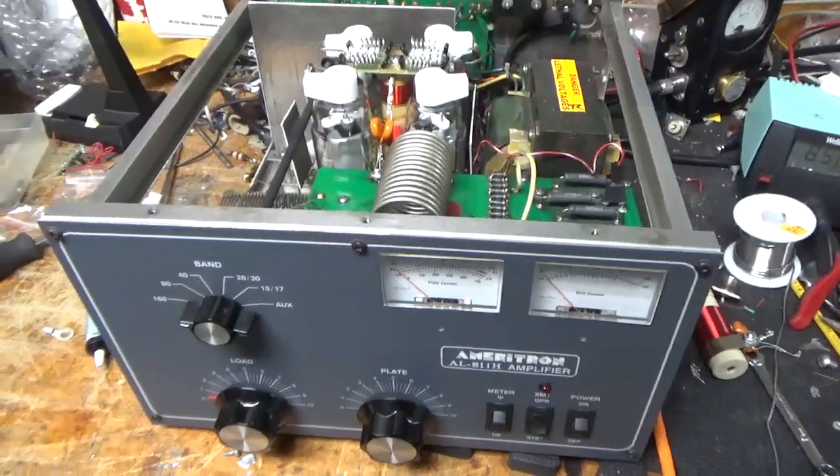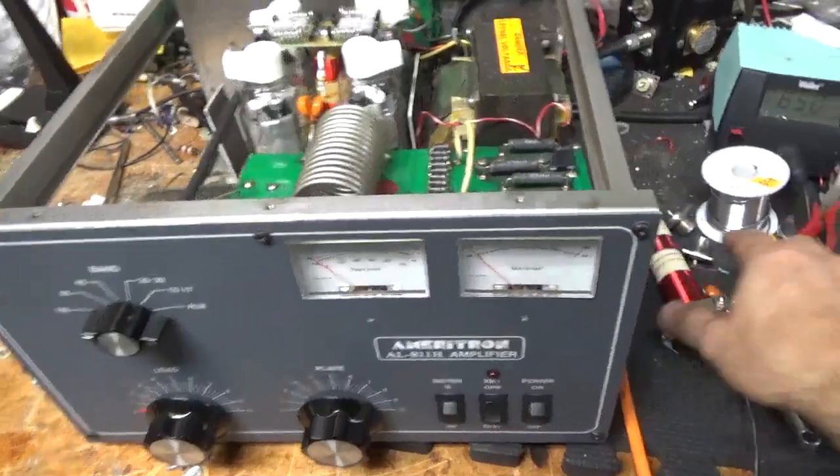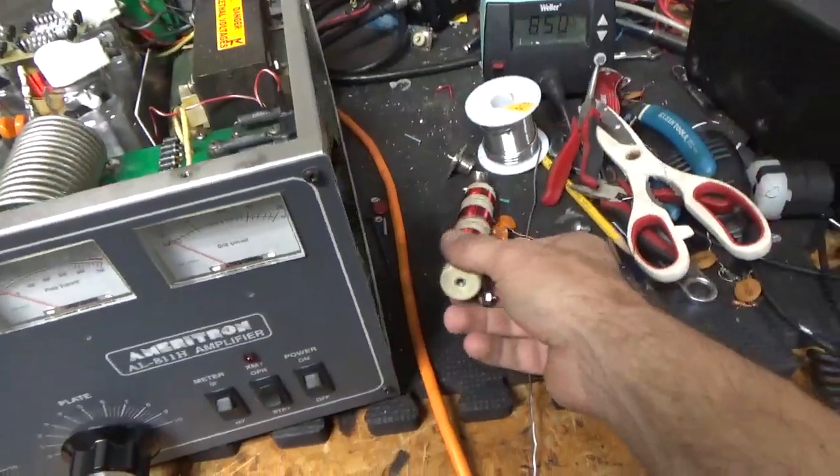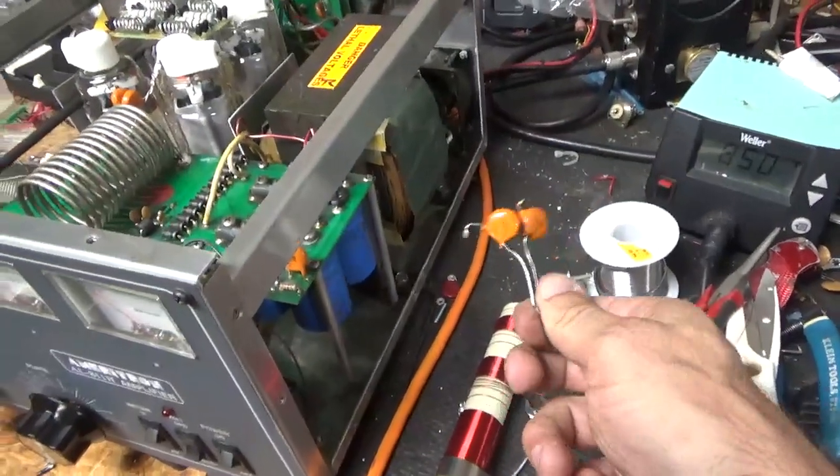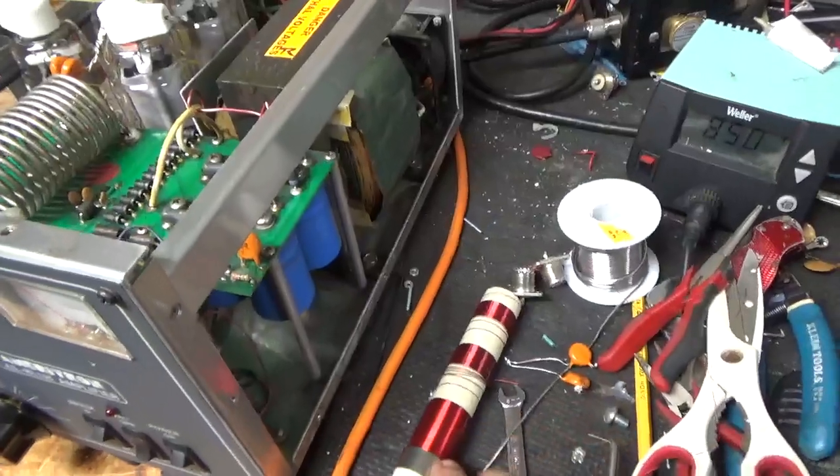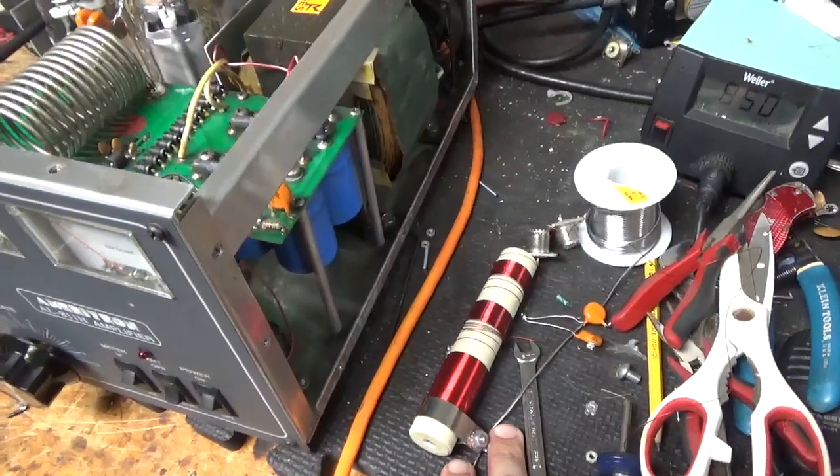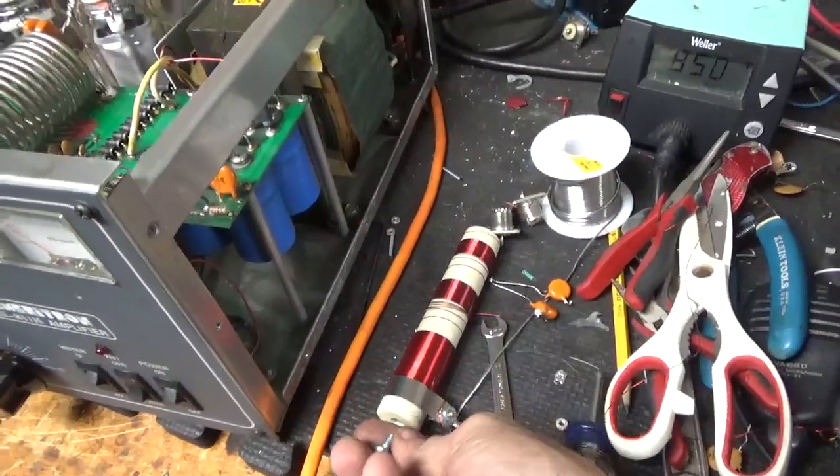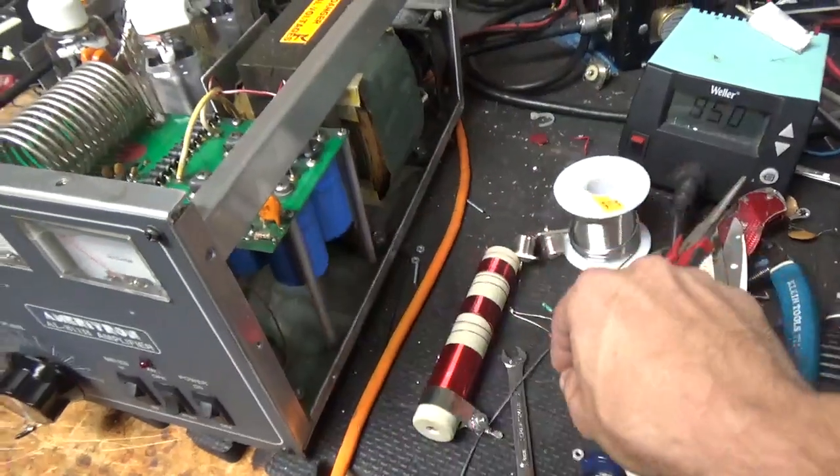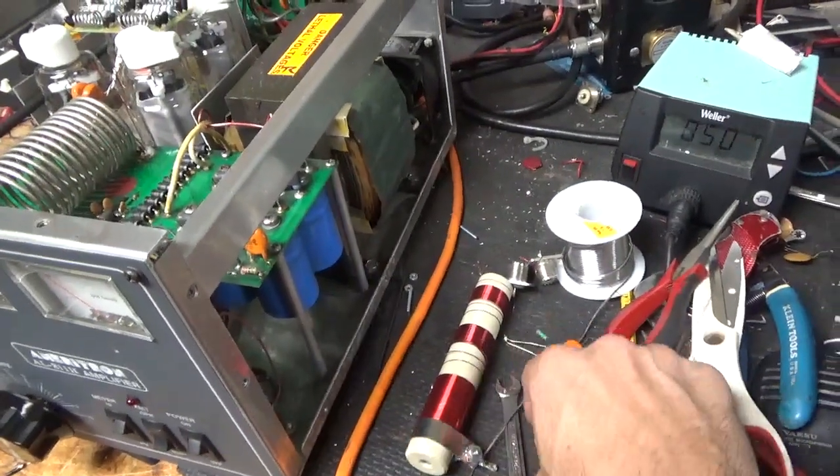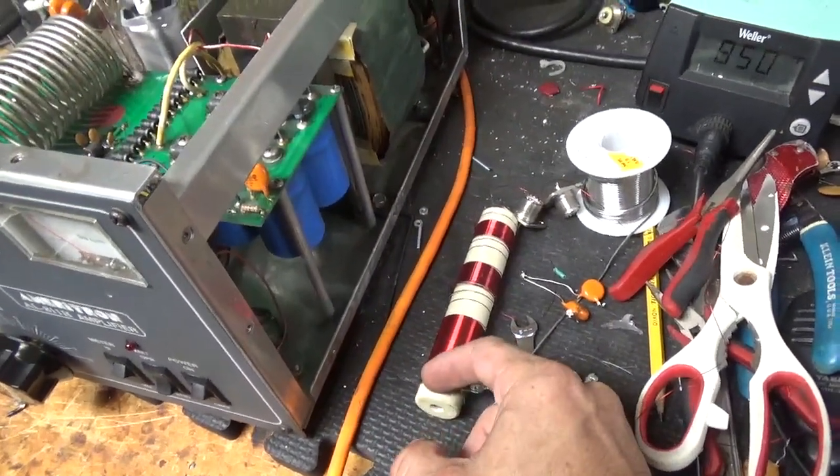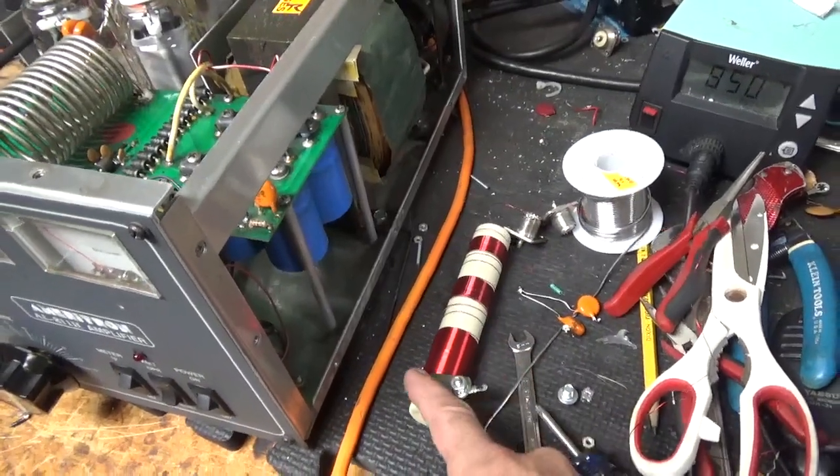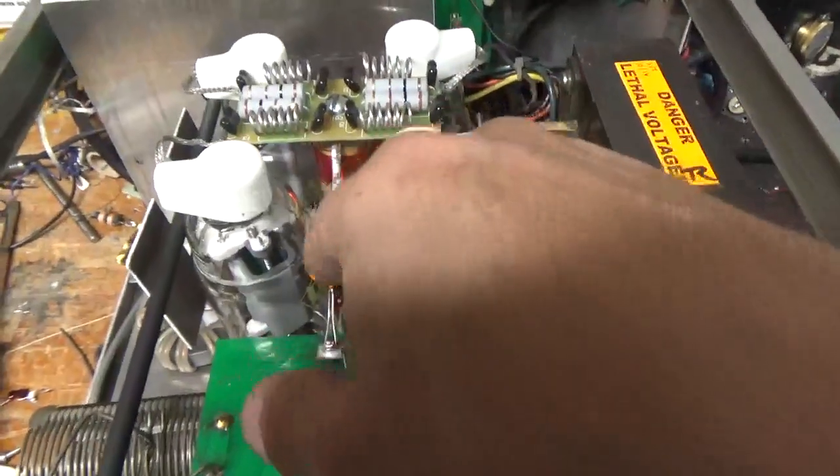I'm back with the completed Ameritron AL-811H. There's the old plate choke, the old SO239s, the old plate blocking caps, the MOV, and the gas discharge tubes are under somewhere. There's the old short screw that went in through the bottom of the plate choke. I always put a longer screw in because it tends to back out, plus it only catches a couple threads. So with the new plate choke, the strap where the B-positive connection is made was actually way too low, the clamp, so I slid it up. And there's the new choke that I did that to.